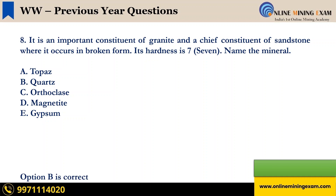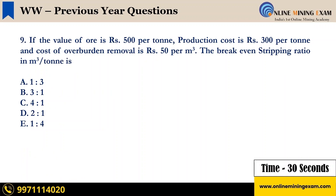Time up. The correct answer is B — Quartz. Next question: If the value of ore is ₹500 per ton, production cost is ₹300 per ton, and cost of overburden removal is ₹50 per cubic meter, the break-even stripping ratio in cubic meters per ton is: A. 1:3. B. 3:1. C. 4:1. D. 2:1. E. 1:4. Your time starts now.